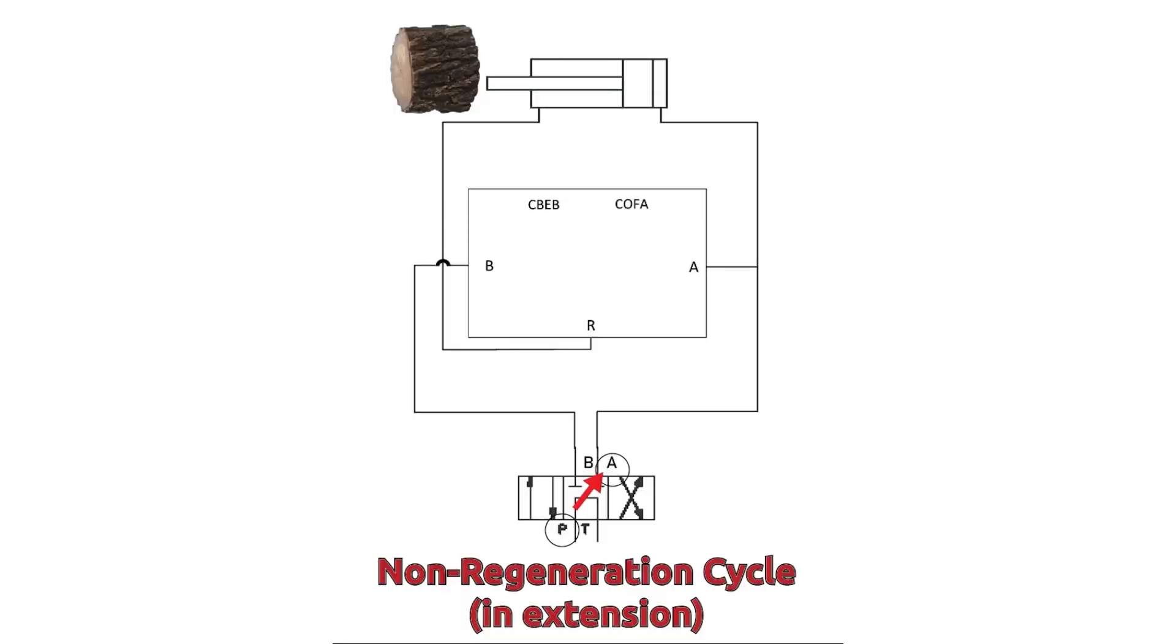When in a non-regenerative cycle, the fluid routing stays the same at first, but once it enters the apport of the regenerative manifold, it moves out the b-port instead of the apport. Once fluid moves out of the regenerative manifold's b-port, it is routed to the b-port and then to the tank.